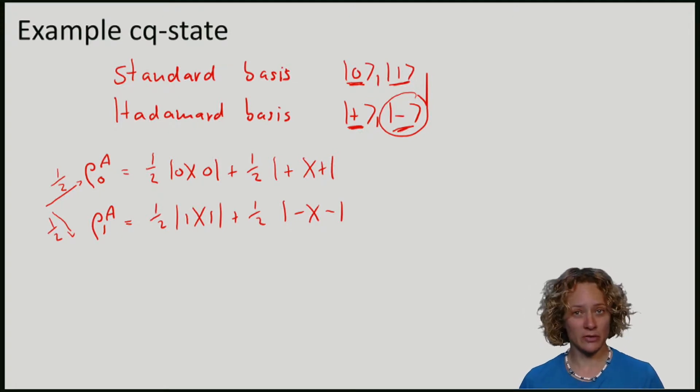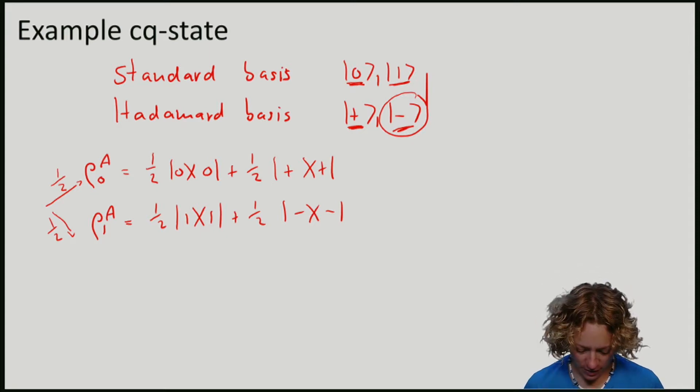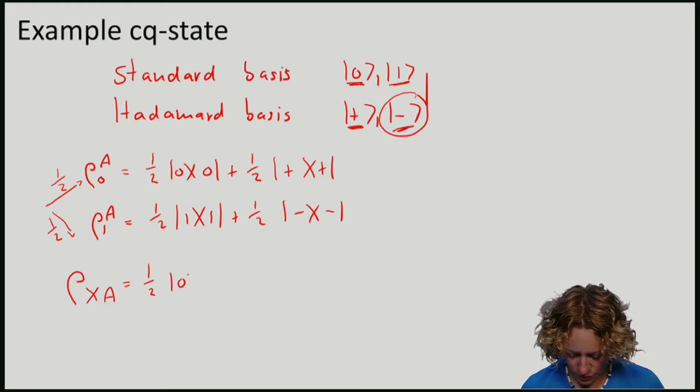I will keep a record of which states I've prepared in a classical system X. So my overall state ρ_XA will be half |0⟩_X⟨0| ⊗ ρ⁰_A. Remember that I was in this case.